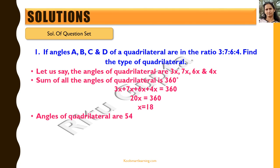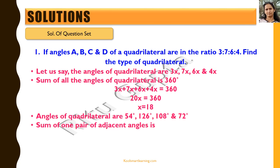So the angles of the quadrilateral are 54, 126, 108 and 72 degrees. We can see that the sum of one pair of adjacent angles is 180 degrees: 54 + 126 = 180 and 108 + 72 = 180. But it's just one pair, so it is a trapezium. In a parallelogram, the sum of any two adjacent angles is 180 degrees, which is not the case here, so this is a trapezium.